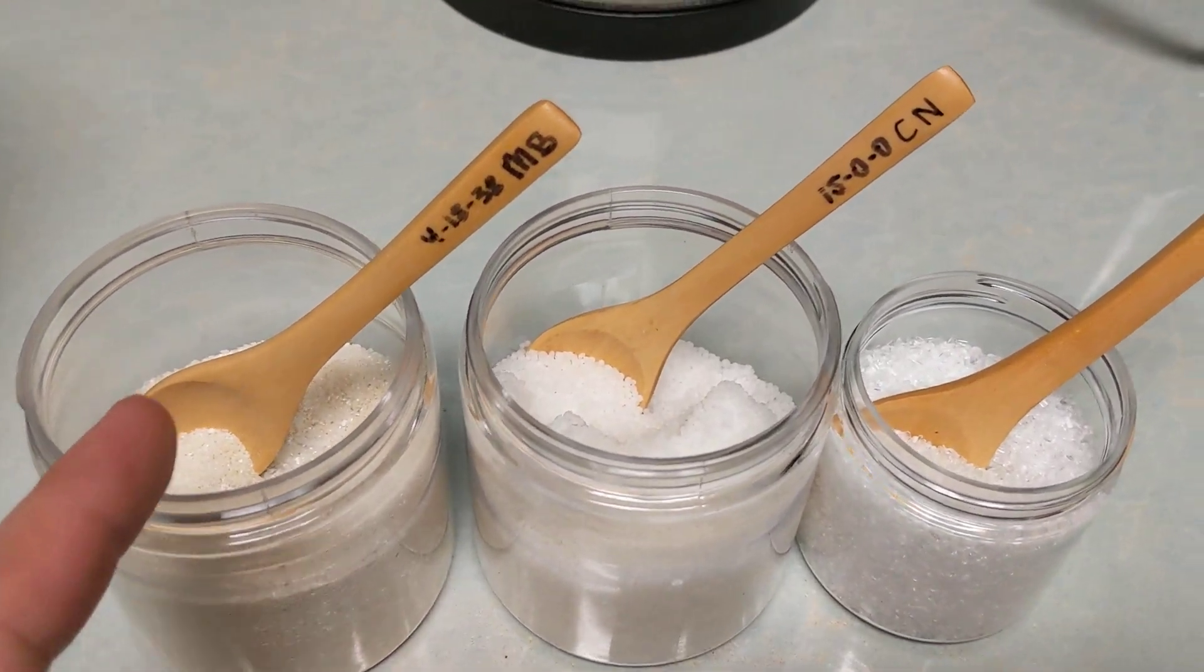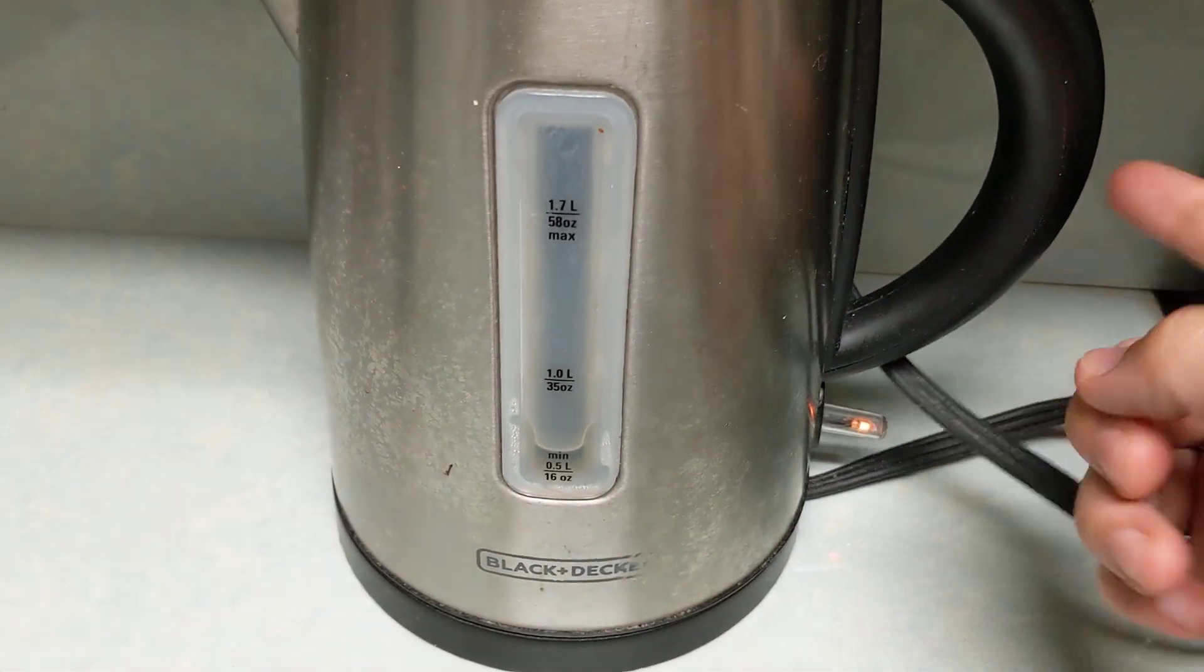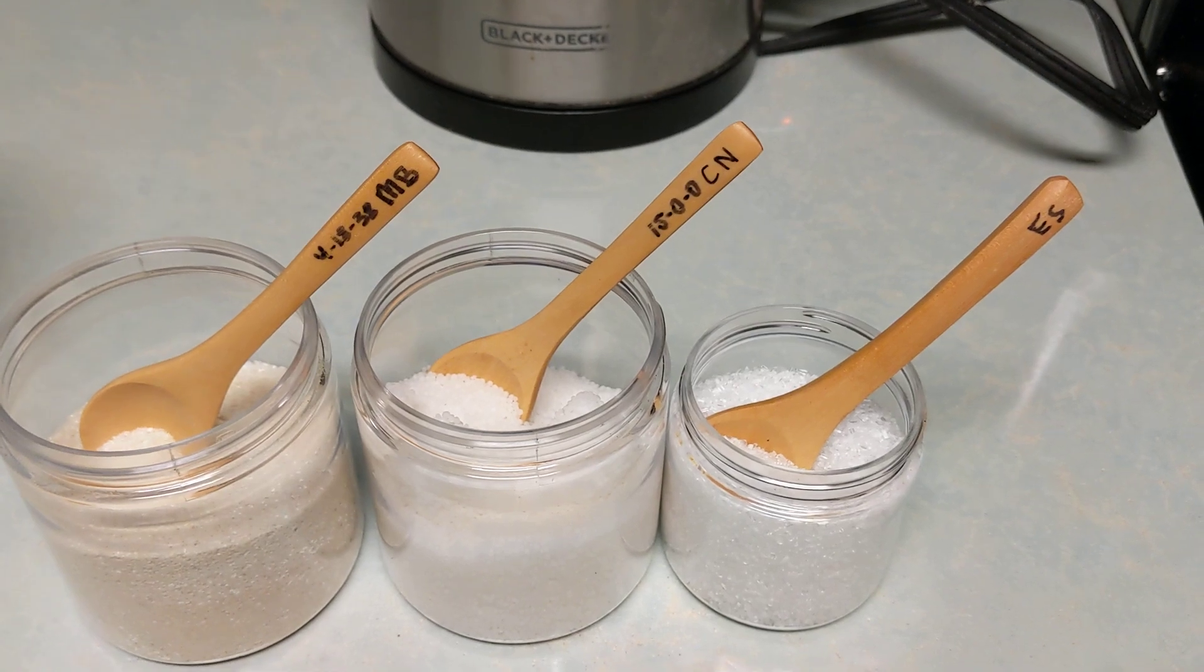I'm going to be using a mixture of master blend, calcium nitrate, and epsom salt. So first thing I do is I always turn on my electric kettle. You could use either the electric or on the stove, whatever you guys prefer.